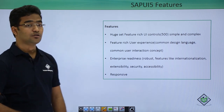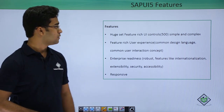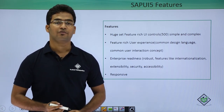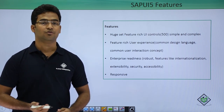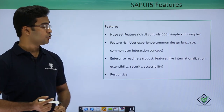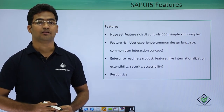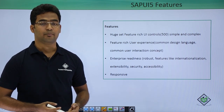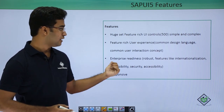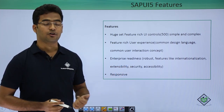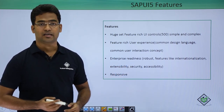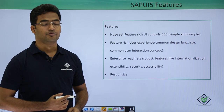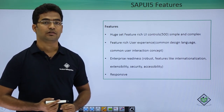Now let us move on to the features of SAPUI5 as a technology. The first feature is that it supports multiple controls — around 500 controls, both simple and complex. It also has a feature-rich user experience supporting a common design language, data models, and data binding. It has enterprise readiness — it is robust, supports internationalization, extensibility, and security. And lastly, all its controls are responsive.